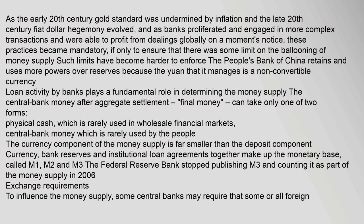As the early 20th century gold standard was undermined by inflation and the late 20th century fiat dollar hegemony evolved, and as banks proliferated and engaged in more complex transactions globally, reserve requirements became mandatory to ensure some limit on the ballooning of money supply. The People's Bank of China retains and uses more powers over reserves because the yuan it manages is a non-convertible currency. Central bank money after aggregate settlement can take only one of two forms: physical cash, which is rarely used in wholesale financial markets, or central bank money, which is rarely used by the people. Currency, bank reserves, and institutional loan agreements together make up the monetary base, called M1, M2, and M3.